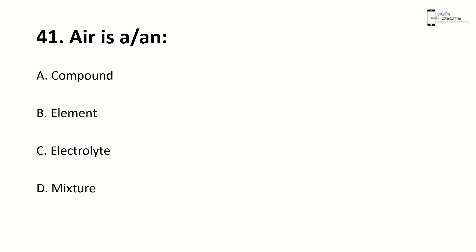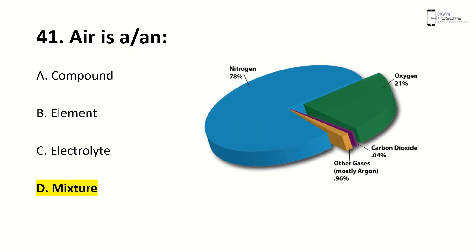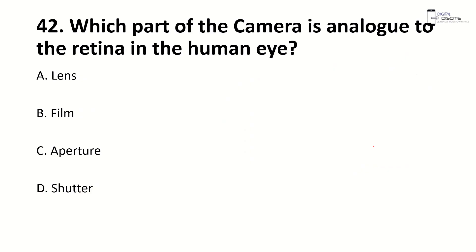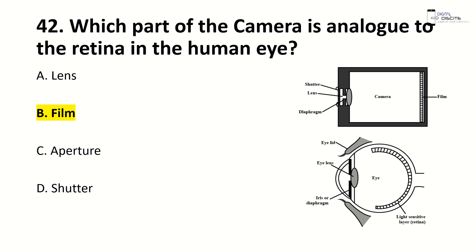Air is a mixture of gases. Which part of a camera is analogous to the retina in the human eye? Right answer is B, film.